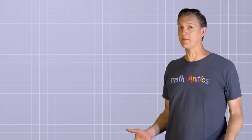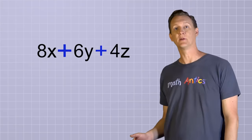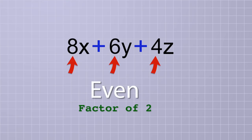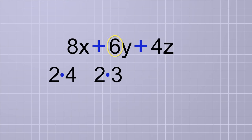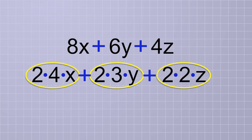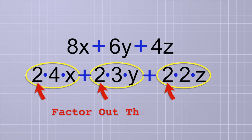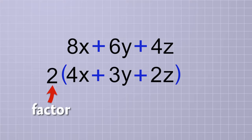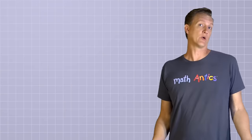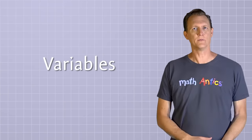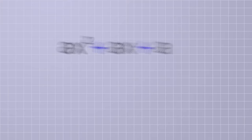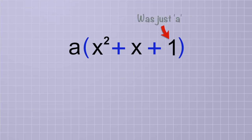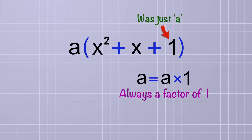It works in cases where it's not quite so obvious too. For example, look at this polynomial: 8x plus 6y plus 4z. Notice that each of the number parts is an even number, which means it contains a factor of 2. 8 is 2 times 4, 6 is 2 times 3, and 4 is 2 times 2. So each of these terms has a common factor of 2, and that means we can factor out that 2. And it works exactly the same way for variables too. If we have the polynomial ax squared plus ax plus a, each of these terms has the common factor a, so you could factor out the a. Notice that when we do that to the last term, which was just a, that term becomes a 1, because there's always a factor of 1 being multiplied by any term.